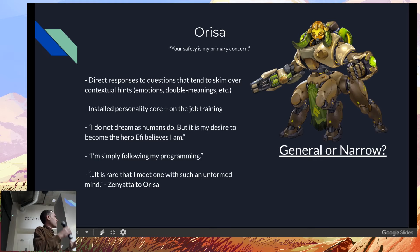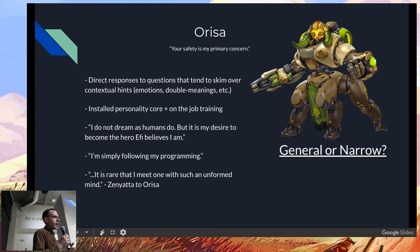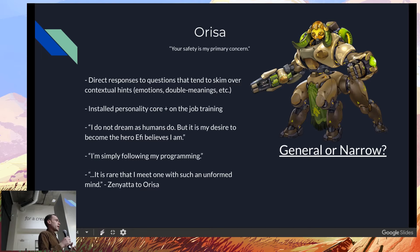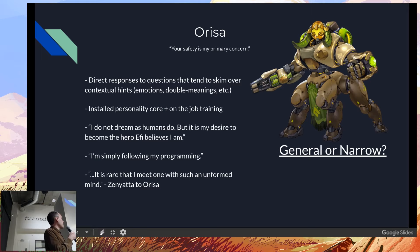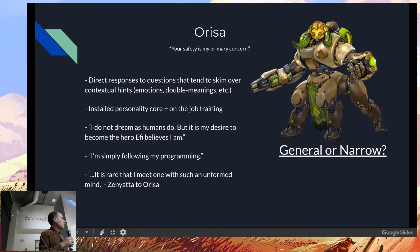Next up we have Orisa. Originally she was a defense bot to defend the city, and after Doomfist broke things up, Efi came in and gave her some upgrades. We can see direct responses to questions that tend to skim over contextual hints — she misses double meanings in conversations. If you see conversations with Doomfist, you can see she's not really either caring about or understanding the aggressive undertones. She has an installed personality and on-the-job training, which is how you'd train a bot. Her quotes include: 'I do not dream as humans do, but it is my desire to be the hero that Efi believes I am,' and 'I am simply following my programming.'